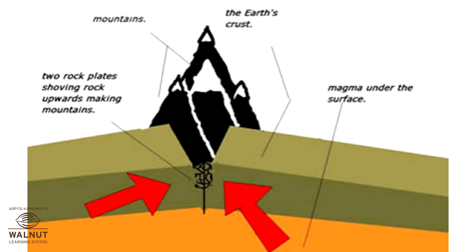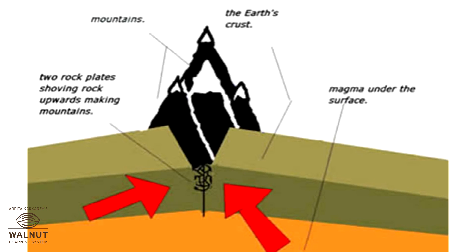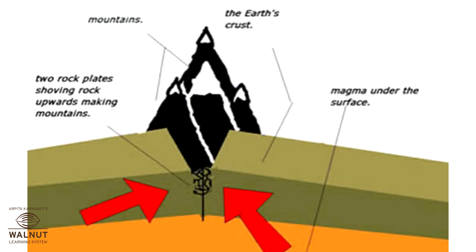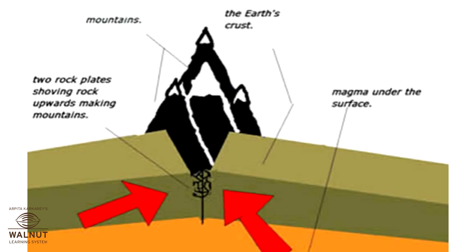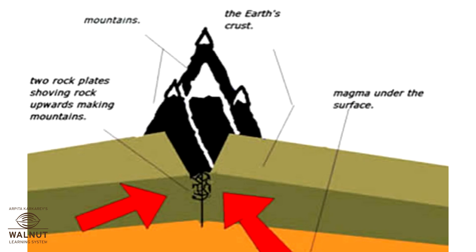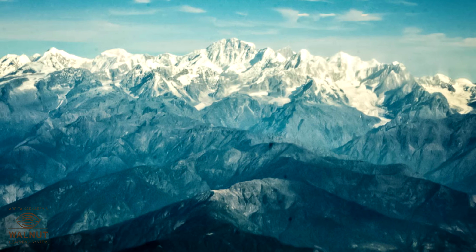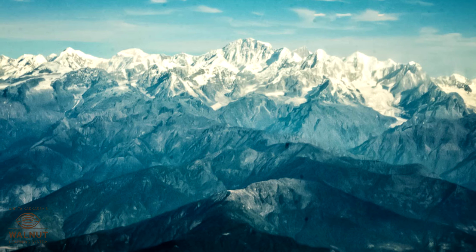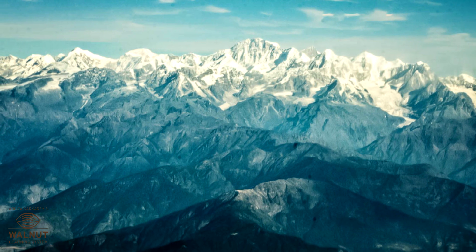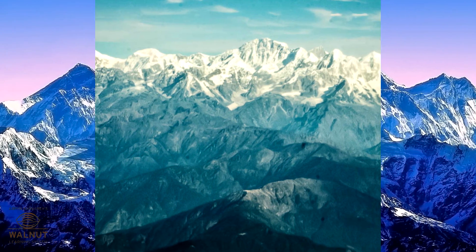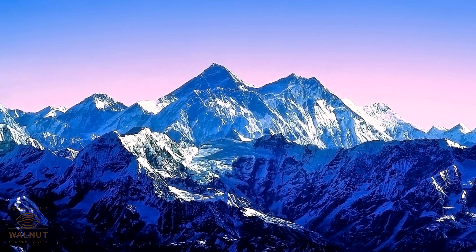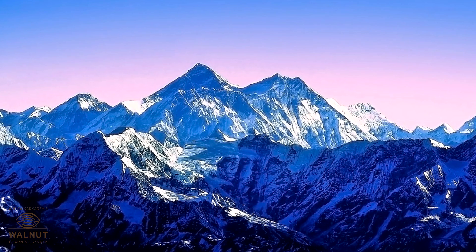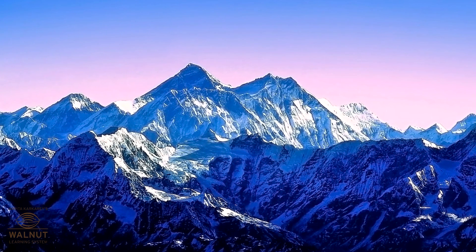When two crust pieces push very hard against each other, their edges crumple and rise up — that gives us mountains. Our huge Himalayas are mountains like that. The crust pieces under the Himalayas are still pushing hard, which is why there are so many earthquakes there, and the Himalayas are getting taller because of this too.